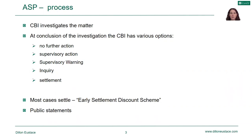The investigation itself can take quite some time to conclude, so it can be quite resource-intensive for a firm. At the end of the investigation the Central Bank has a couple of options. It can decide to take no further action, for example if there is no evidence to substantiate the suspected breach. It could take a supervisory action such as imposing a condition or requirement on a firm, or it could issue a supervisory warning. A supervisory warning may be used where the breach is very minor, there has been immediate remedial action, and there has been full cooperation. Essentially a supervisory warning is a written warning which will form part of the firm's compliance record, but there won't be publicity or a fine.